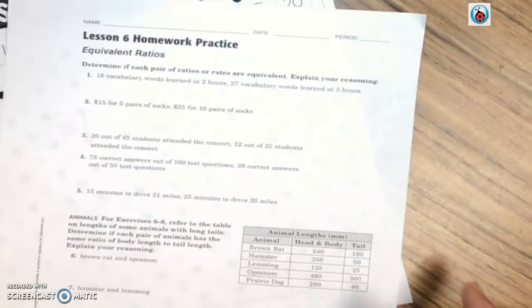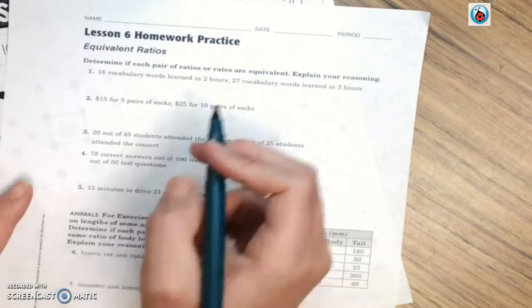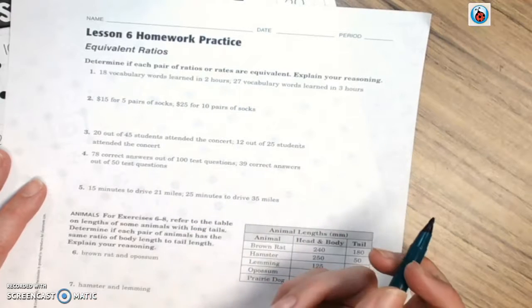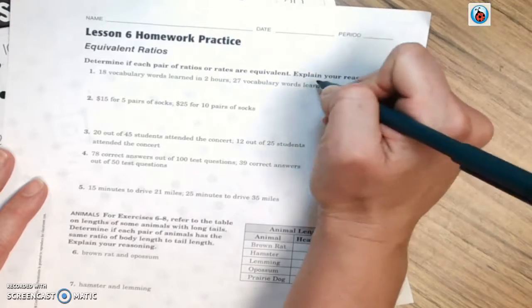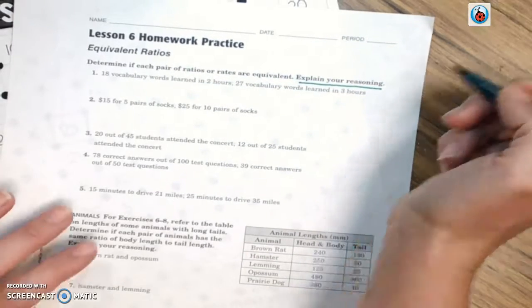Here's our worksheet. Make sure your name is at the top and your number. Let's take a look at these first five. It says determine if each pair of ratios or rates are equivalent and then explain your reasoning. Remember in our case for explaining your reasoning, that's just your work.